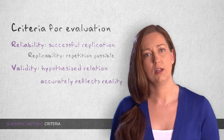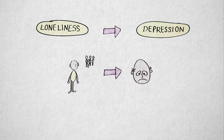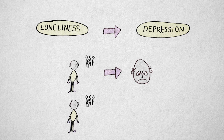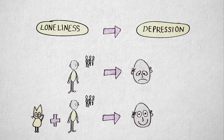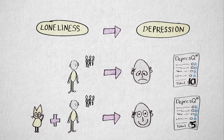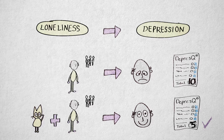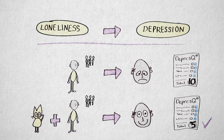Suppose I hypothesize that loneliness causes feelings of depression. I deduce that if I decrease loneliness in elderly people by giving them a cat to take care of, their feelings of depression should also decrease. Now, suppose I perform this study in a retirement home and find that depression actually decreases after residents take care of a cat. Is this study valid? Do the results support the conclusion that loneliness causes depression?